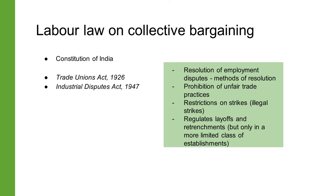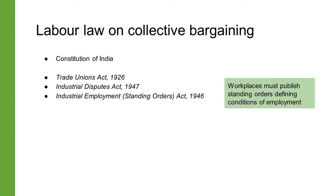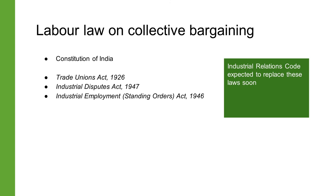The Industrial Disputes Act also regulates layoffs and retrenchments. The protective clauses in Chapter 5B do not apply to establishments employing fewer than 100 workers, and those in Chapter 5A do not apply to establishments employing fewer than 50 workers. The Industrial Employment Standing Orders Act of 1946, which applies to industrial establishments employing at least 100 workers, requires workplaces to draft standing orders defining employees' conditions of employment—a registered trade union may raise objections before these are certified. The Industrial Relations Code, set to replace these acts, provides for recognition of a trade union as a sole negotiating union only if it has 51 percent membership, and requires two weeks' notice before any strike.